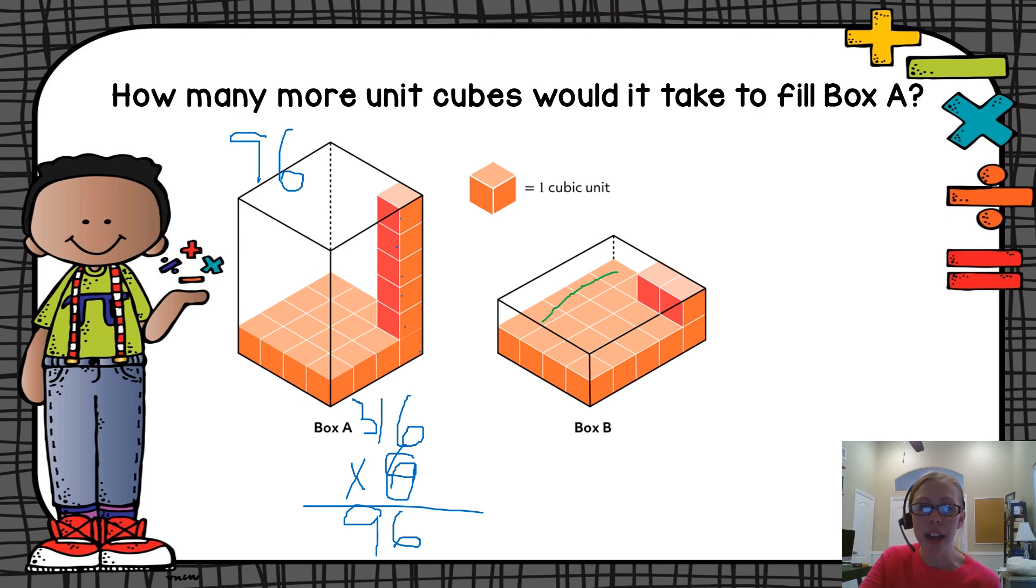As I count these out, I notice you can count quickly: one, two, three, four, five in one row. I've got four rows of five here, so my base layer contains 20 unit cubes. To find the volume, I'm going to multiply that 20 by how many layers I have.